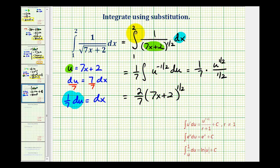But remember, this is a definite integral. So now we need to evaluate this at two and one. So we're going to have two-sevenths. And then when x is two, we're going to have seven times two. That's fourteen plus two. That's sixteen to the one-half power, or the square root of sixteen.